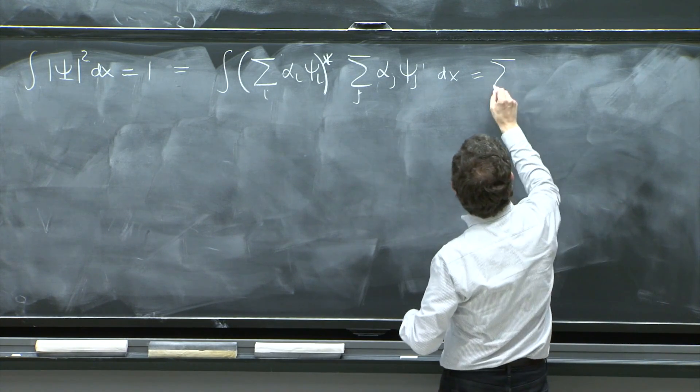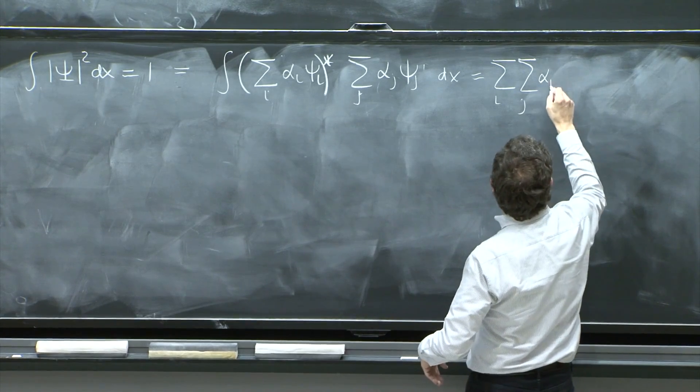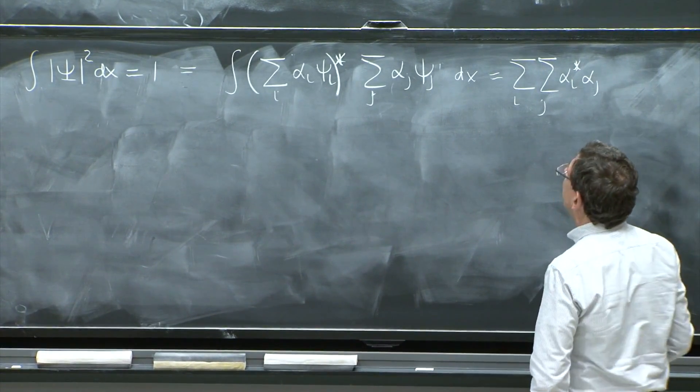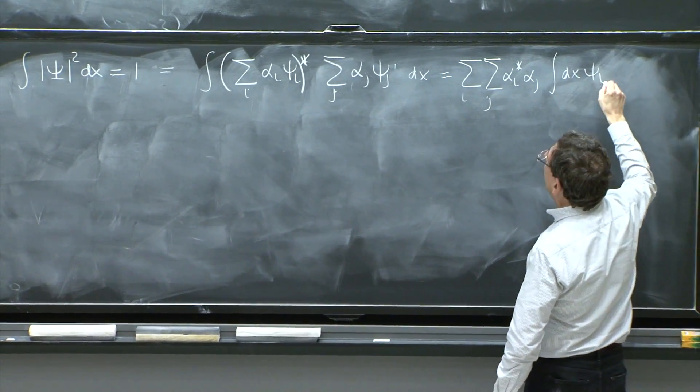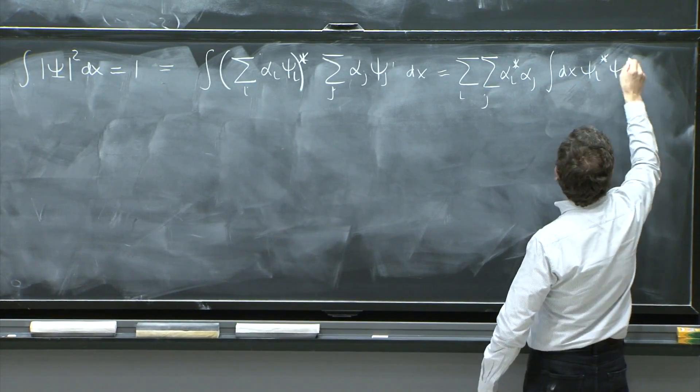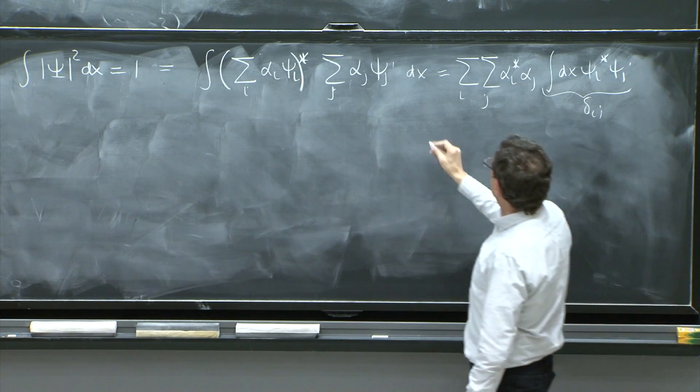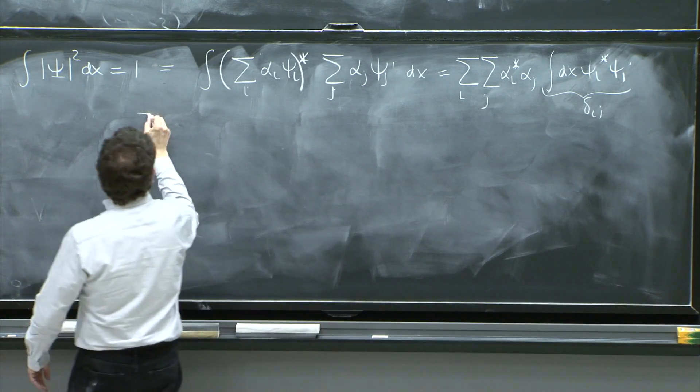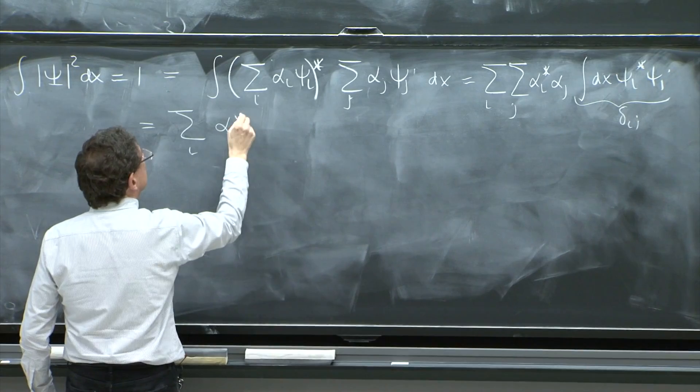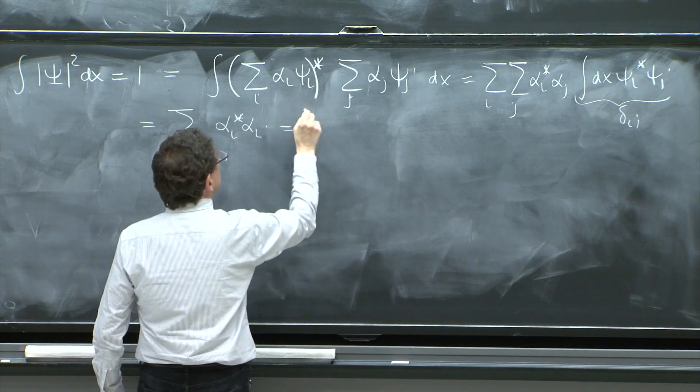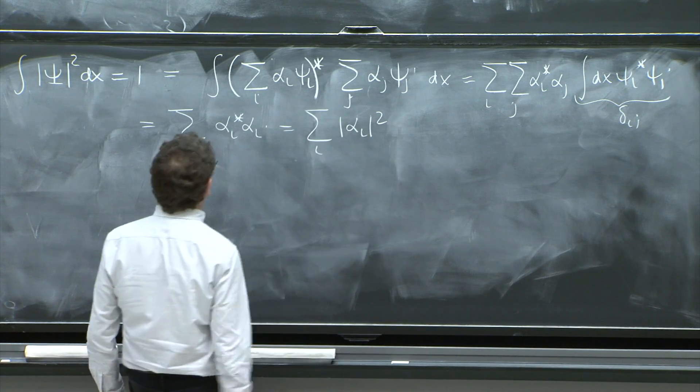Now I take out the sums. Sum over i, sum over j, alpha i star alpha j, integral dx psi i star psi j. This is delta ij. Therefore, j becomes equal to i. And you get sum over i of alpha i star alpha i, which is the sum over i of the alpha i squared.